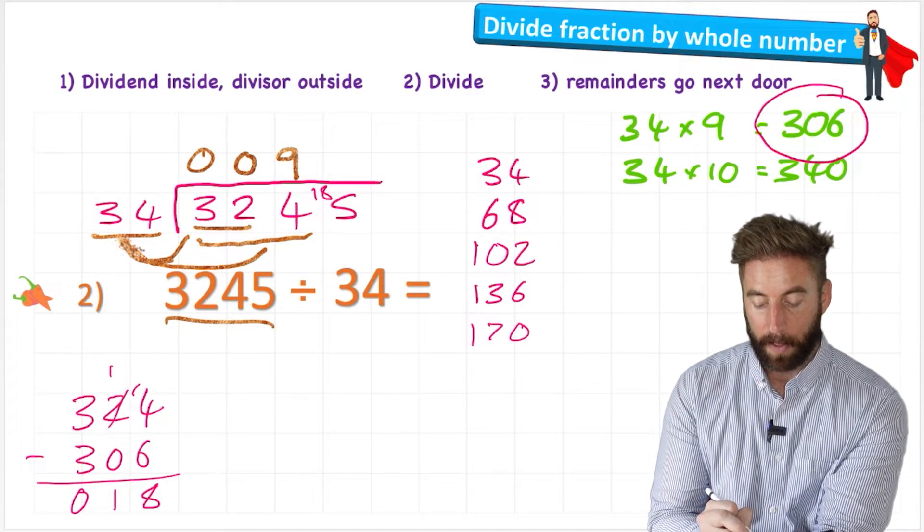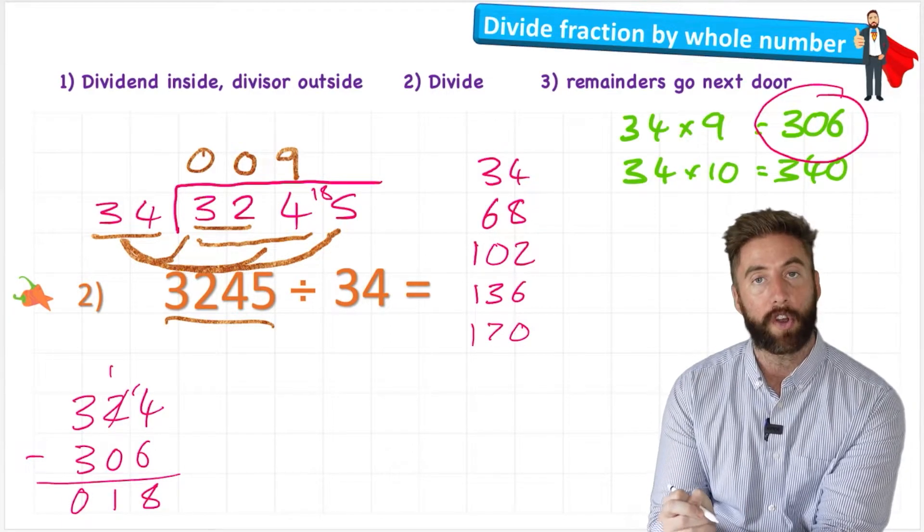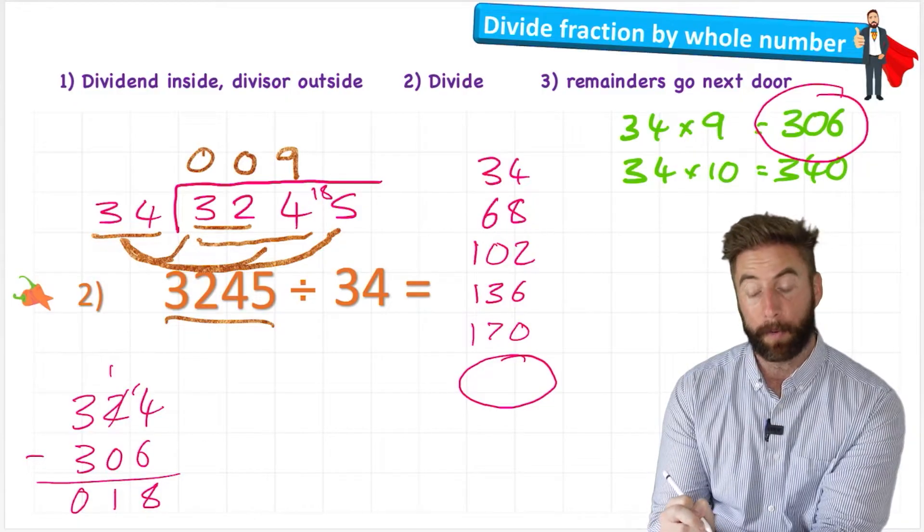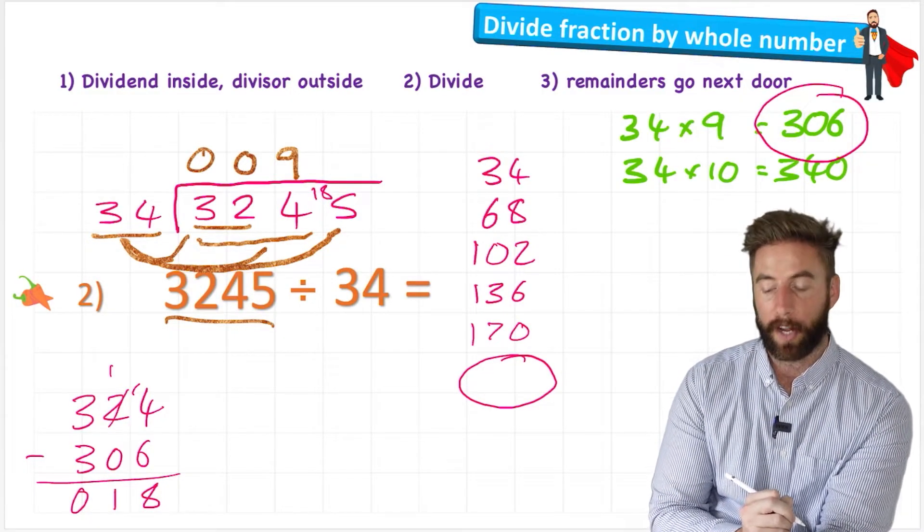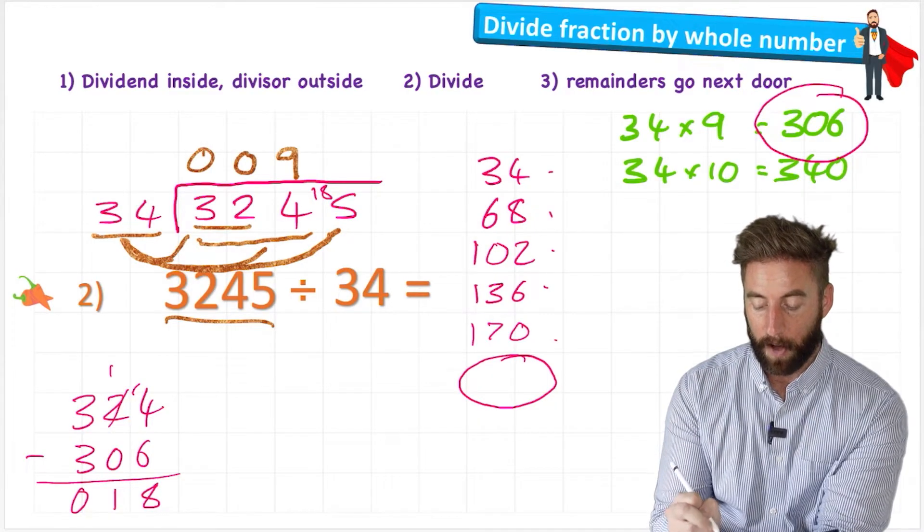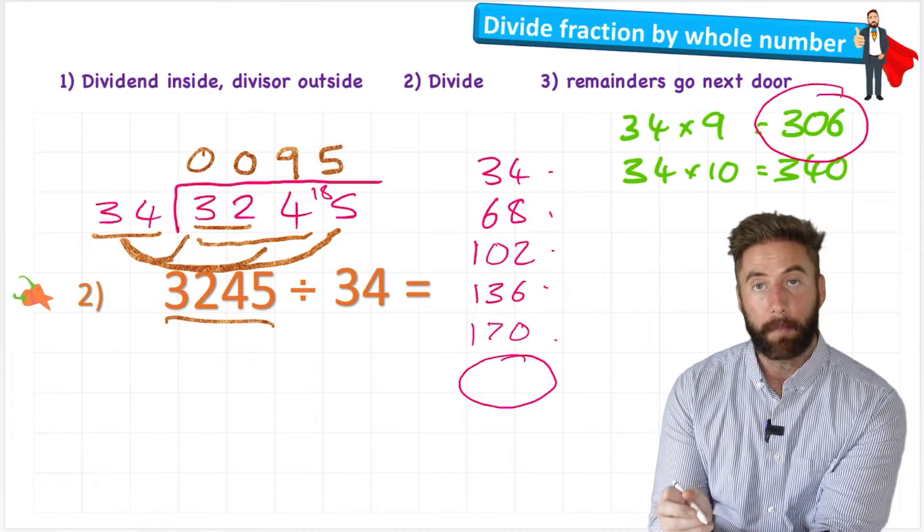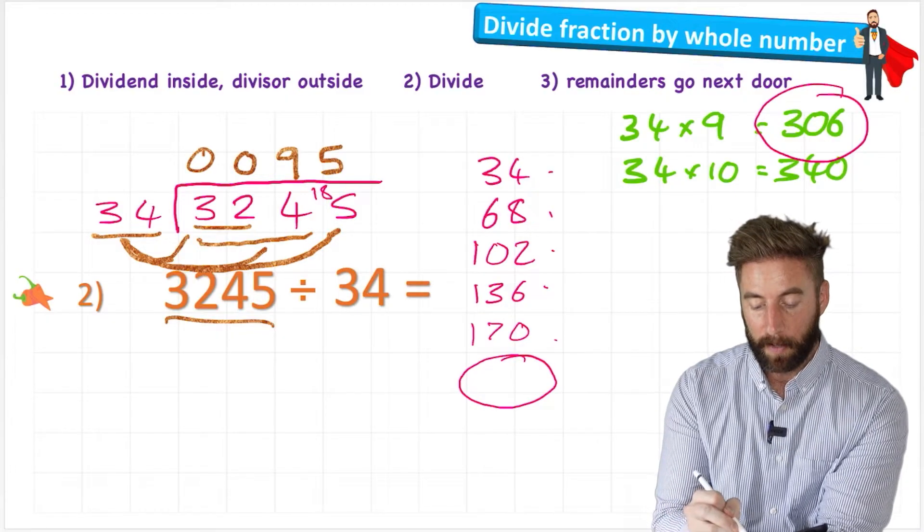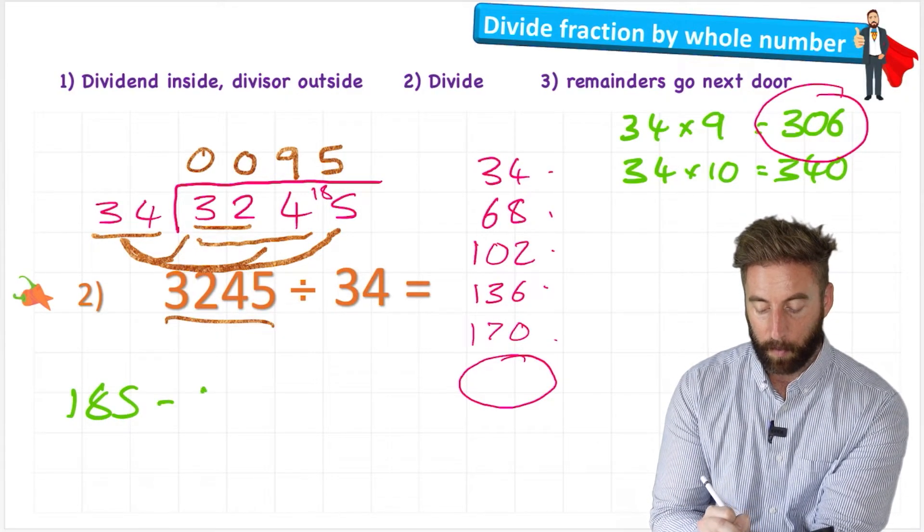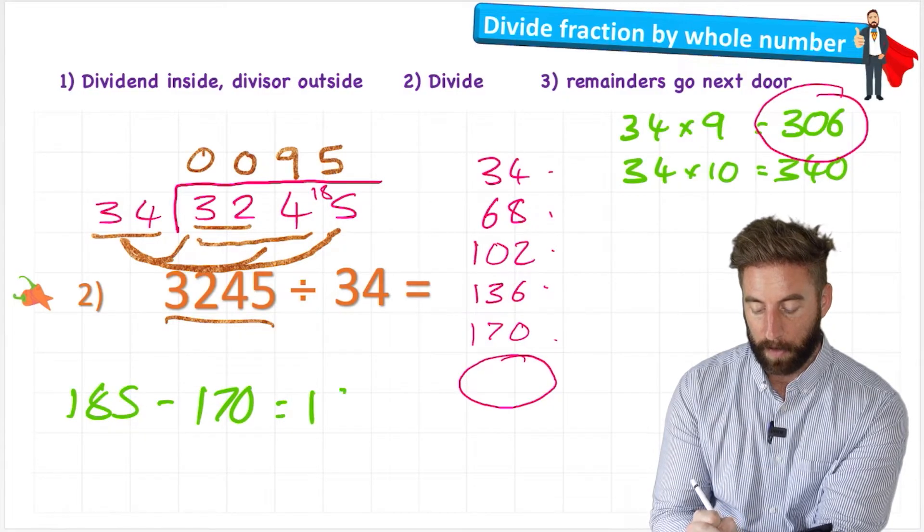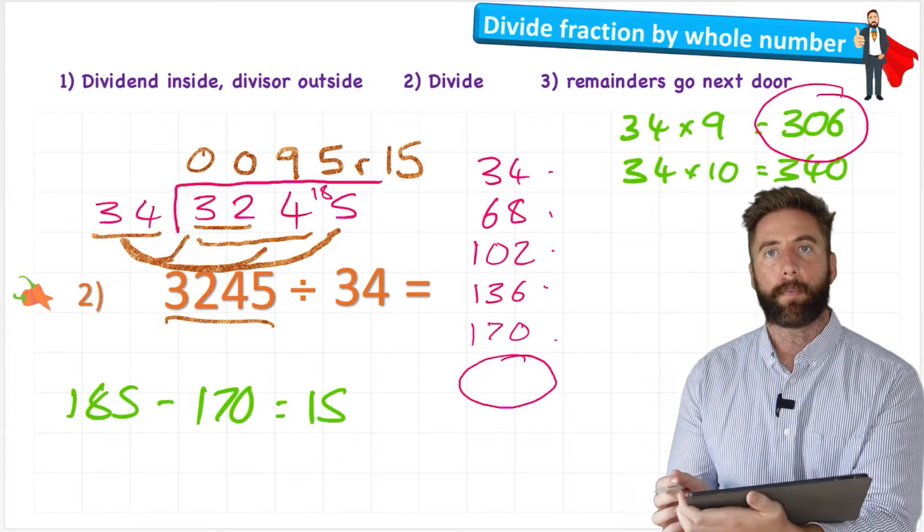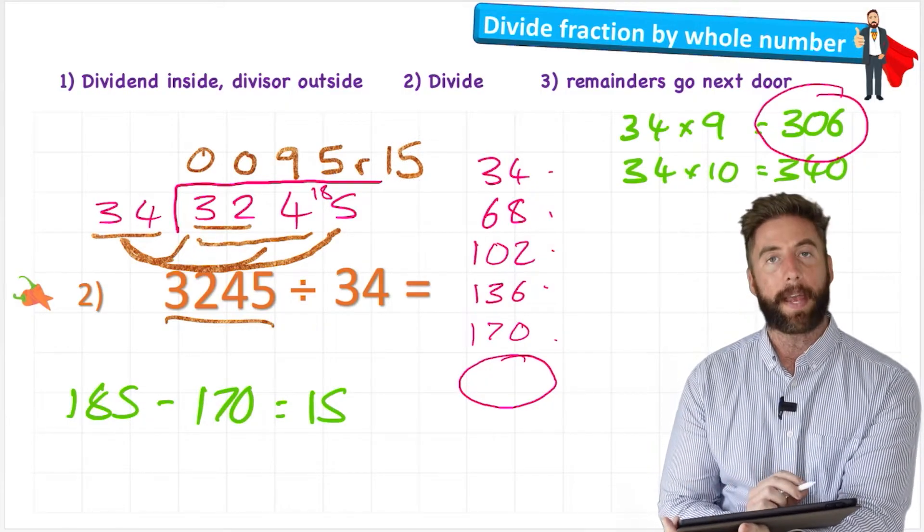Now I can ask myself how many 34s are there in 185. And I can see that if I try to add another number down here in my multiplication, it's going to be way bigger than 185. So I know that there's going to be 1, 2, 3, 4, 5. So my answer is 5. But that only took us to 170. So I can do 185 subtract 170 equals 15. So I would have a remainder 15. So my final answer is 95 remainder 15.